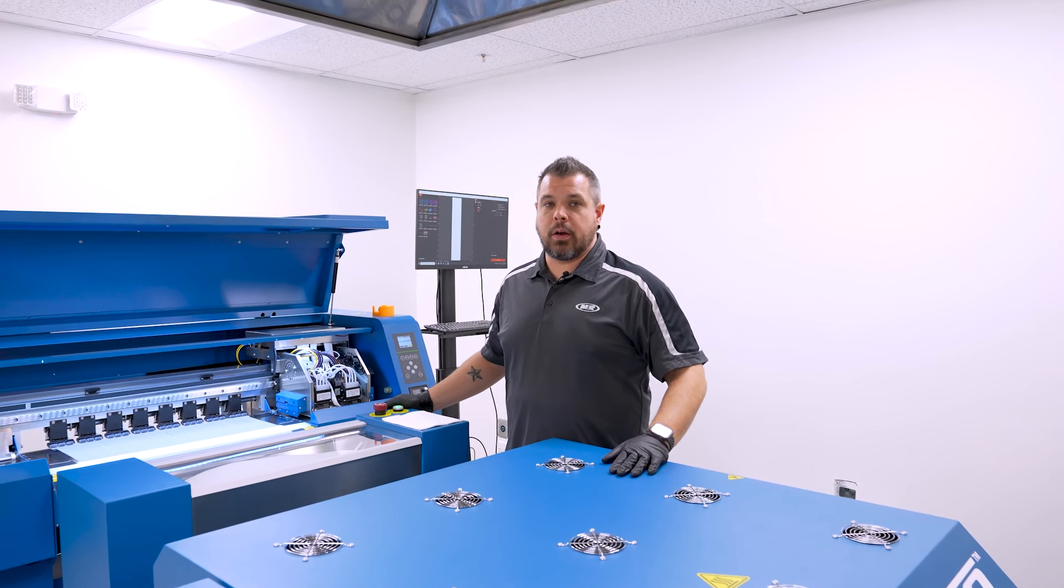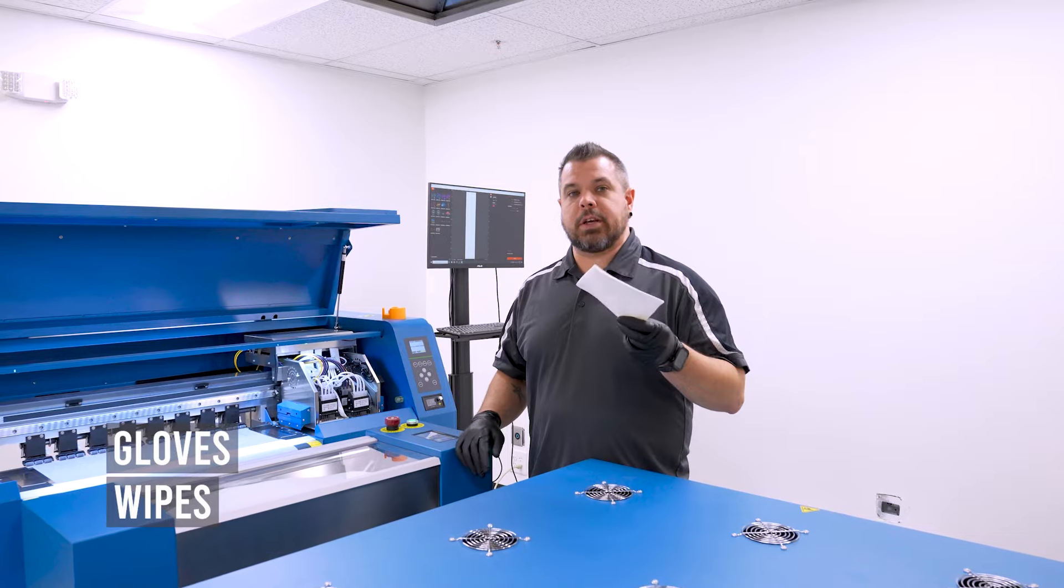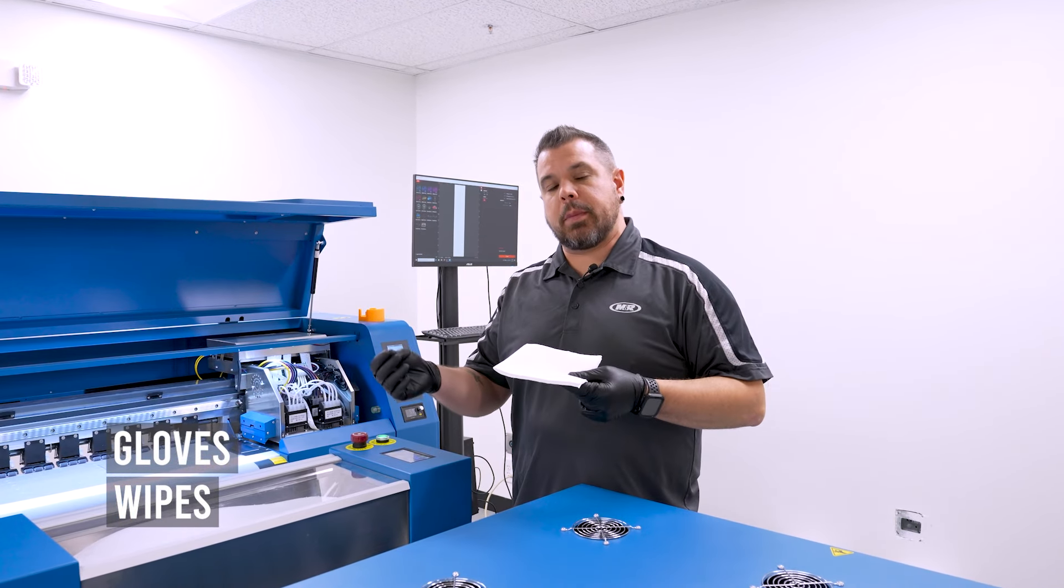Now in order to do this, you are going to need two things. You're going to need some gloves, and you're going to need some type of wipe to wipe off the tubes when you take them out of your waste tank.